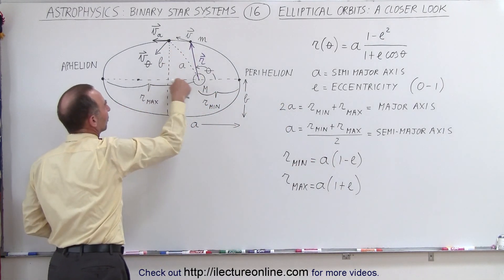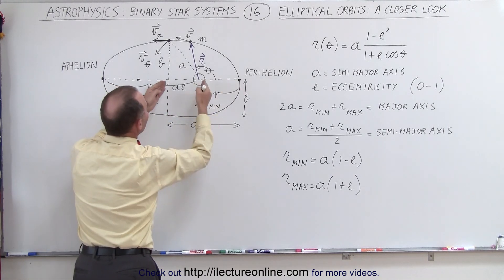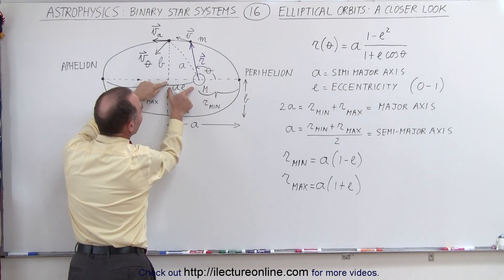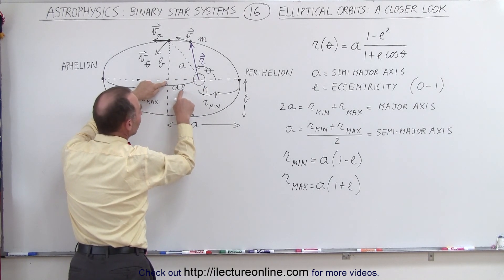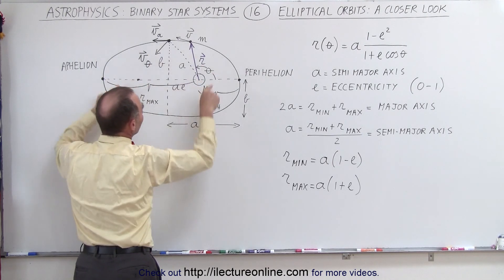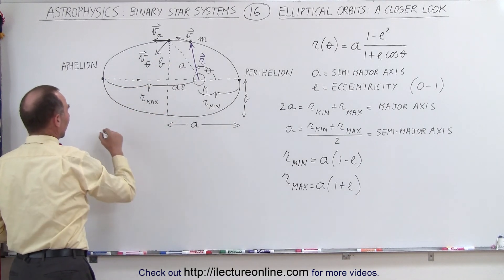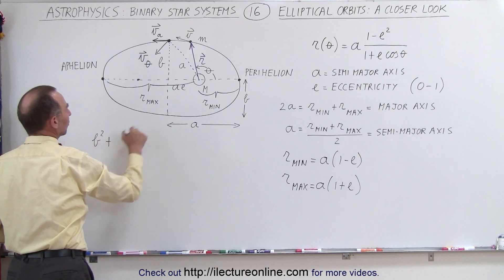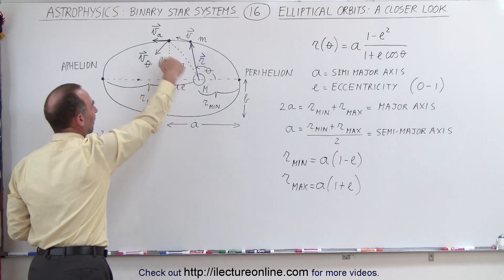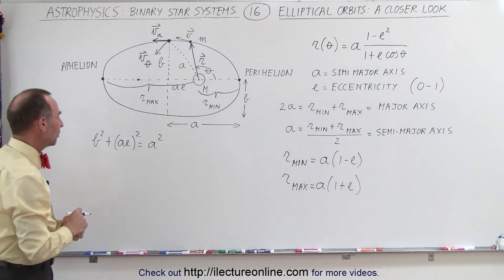You can also use the Pythagorean theorem on this triangle, because the distance from the center to the sun is a times e. If e is 0, then a times e would be 0, and the sun would be right at the middle, giving a circular orbit. So we can apply the Pythagorean theorem: b squared plus (ae) squared is equal to the hypotenuse squared, which is a squared. Let's solve this equation for e.